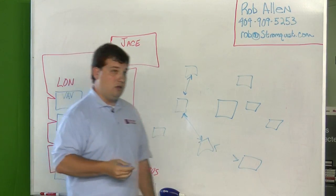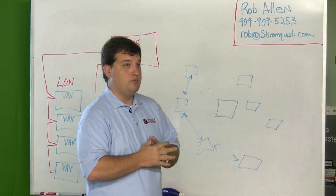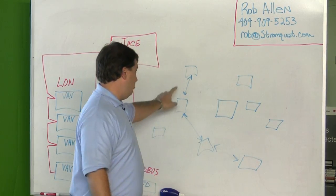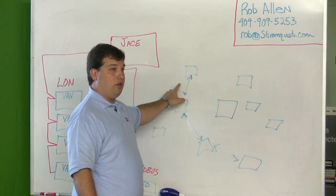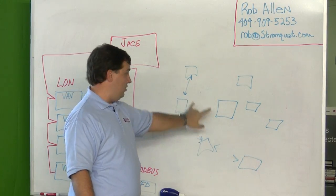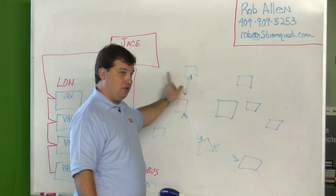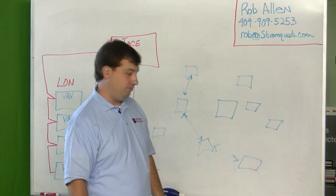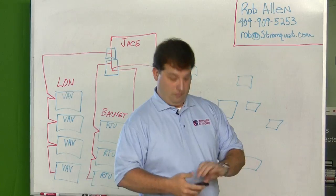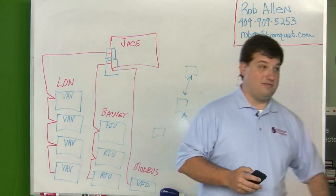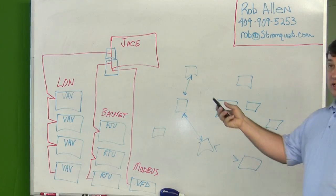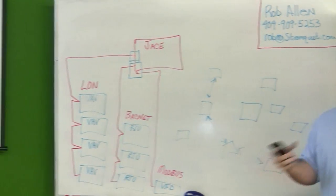If you need to extend range, you can put another coordinator or just another wireless flag out there to bridge the gap. That's communication cards — that's the hardware that connects back into the Jace.